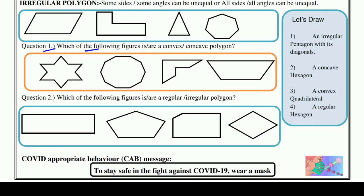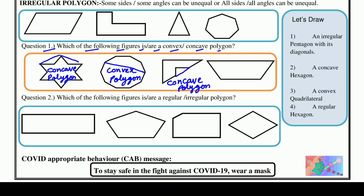Question number one: which of the following figures are a convex or concave polygon? अब आपको बताना है — इनमें से concave कौन सा और convex कौन सा है। तो देखें: ये तो बाहर भी बन रहे हैं, तो ये concave polygon है। इसके inside में ही बन रहे हैं — interior में — तो ये convex polygon है। फिर इसका exterior में भी बन रहा है, तो ये concave हुआ। और इसके अंदर ही बनेँगे, तो this is convex.